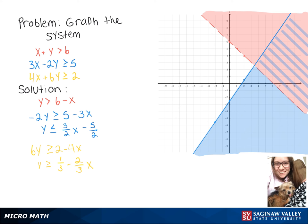So once again, we're going to graph that line, and this one is going to be a solid line because it's greater than or equal to. And then we're going to shade everything above it.